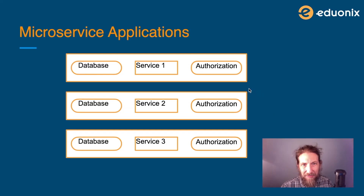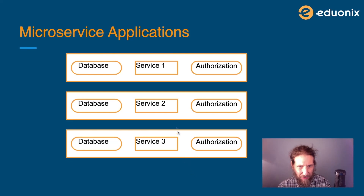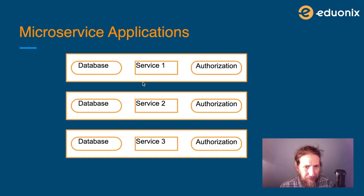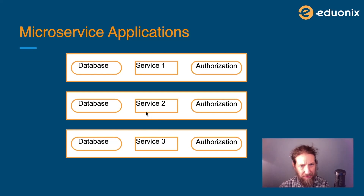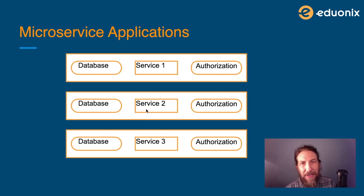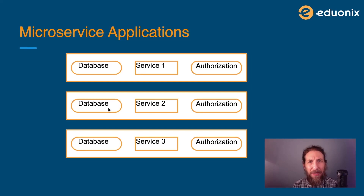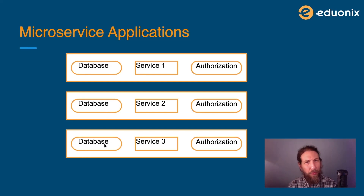With the microservice architecture, we've divided the big application into smaller pieces. We have a separate database for each service and separate middleware as well. These are totally independent services, and if one of them fails, the others will continue to operate. One of the main advantages of microservices is their resiliency, and to get that benefit you have to make sure that these services are standalone — that's very important to understand.